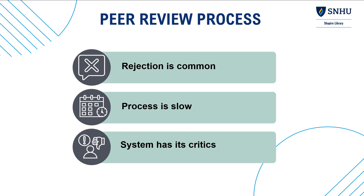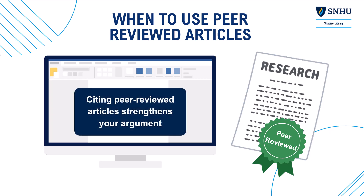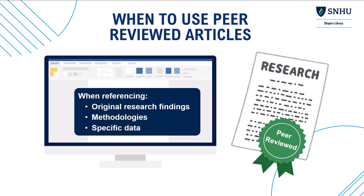Given that the peer-review process adds a level of credibility and trust to research, it's wise to use and cite peer-reviewed articles in your research, which your instructors will look for. Citing them not only backs up your points with strong evidence from respected sources, but also enhances your credibility as a researcher. Specifically, you should use peer-reviewed journal articles when you need to reference original research findings, methodologies, or specific data.